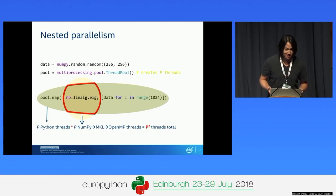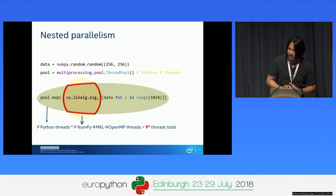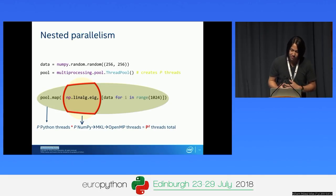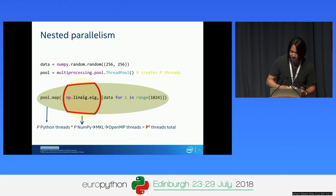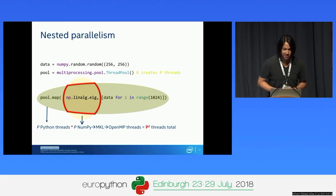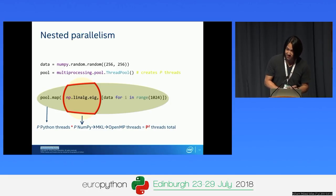What does that actually look like? The answer is it can look like relatively benign code. For many of you, this may look like a very simple thing you'd run into if you were just developing with NumPy or trying to scale just a little bit. Here we have a NumPy random call, multiprocessing pools with a thread pool, and a pool.map on a NumPy call. The problem is you've now done a composable nested parallelism without even knowing it.